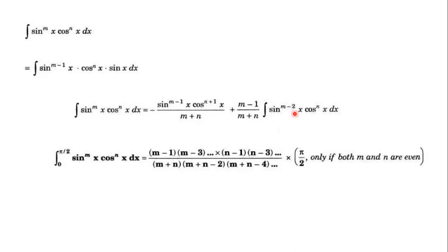This is the definite integral from 0 to pi by 2. For the reduction of sin^m cos^n, the numerator takes m minus 1, m minus 3, m minus 5 and n minus 1, n minus 3, n minus 5. In the denominator, we add m plus n, then m plus n minus 2, m plus n minus 4, and likewise. If both powers are even, we multiply by pi by 2 at the end. Let us see some examples to make this clear.